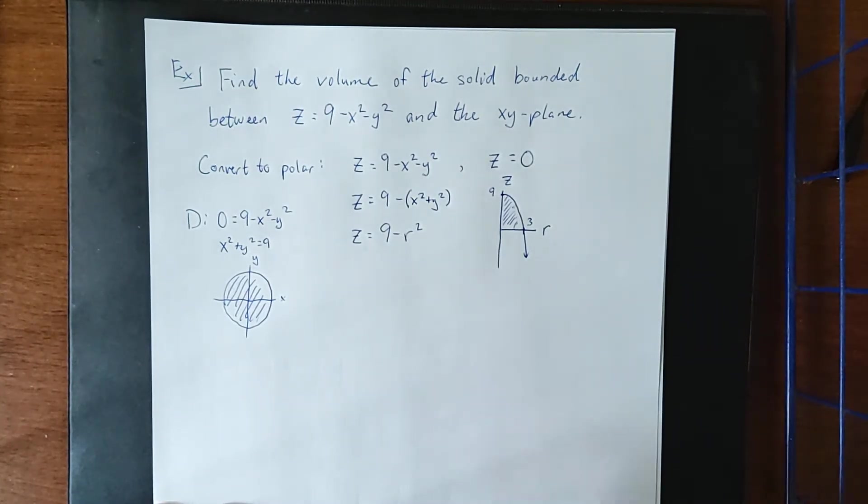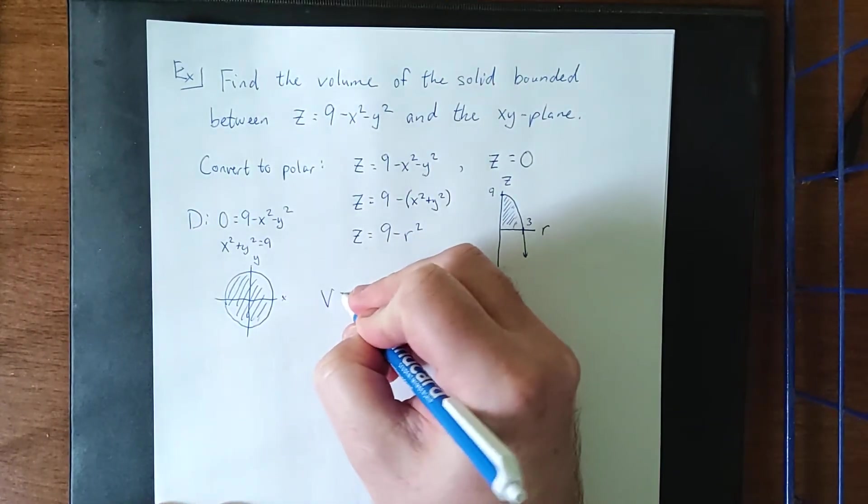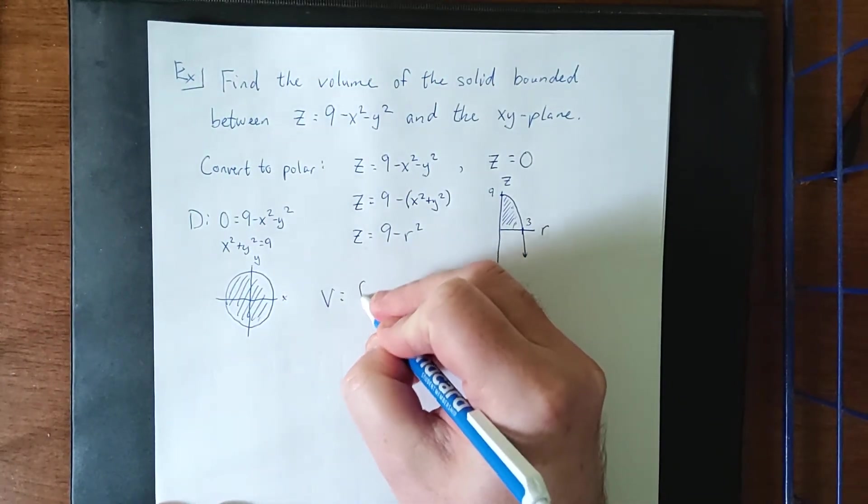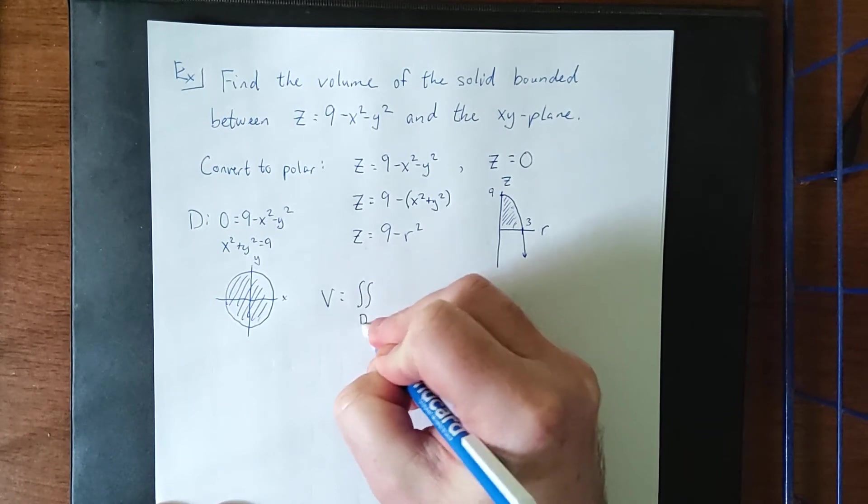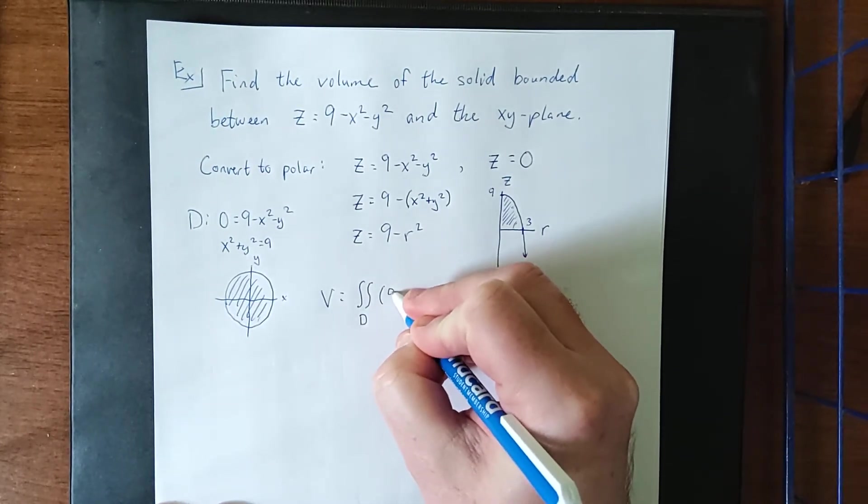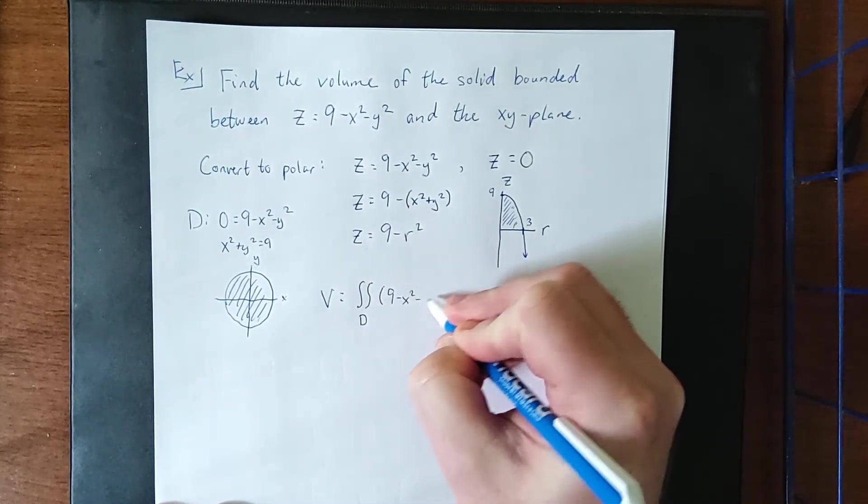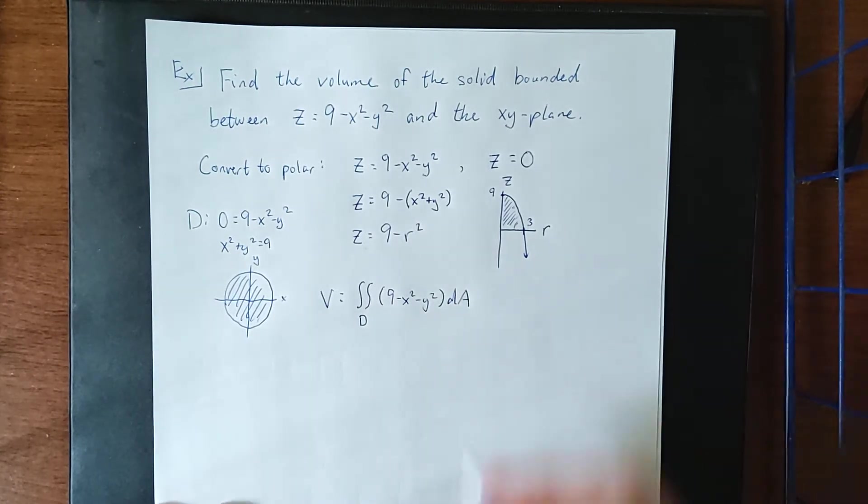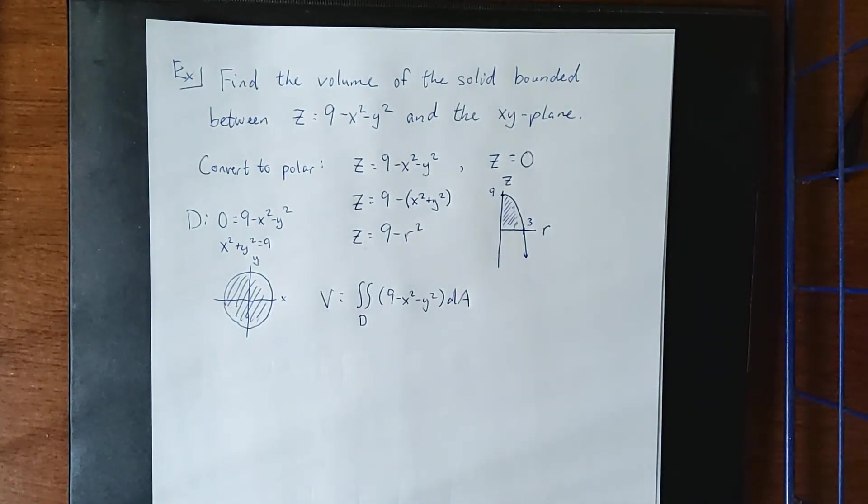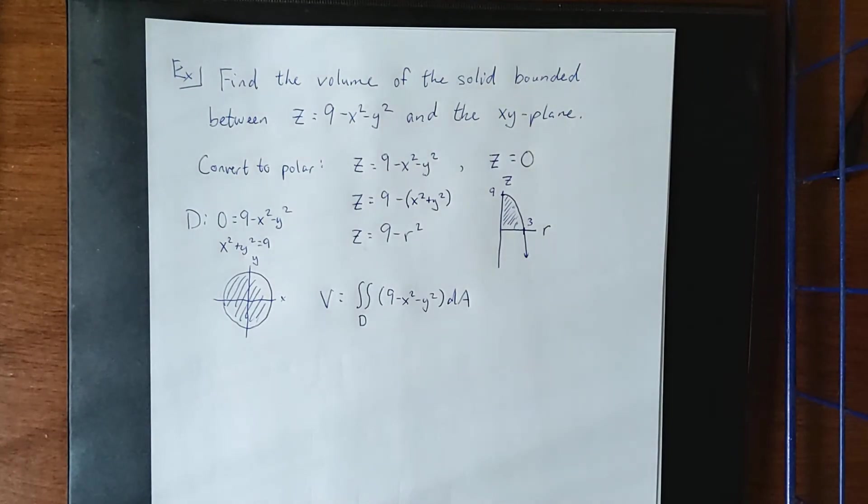So what I'm going to do is set up what our volume would look like. Volume would be equal to the double integral over our region d of our function dA. Now because this thing does look as round as it does, I do want to convert it into polar coordinates for our double integral.